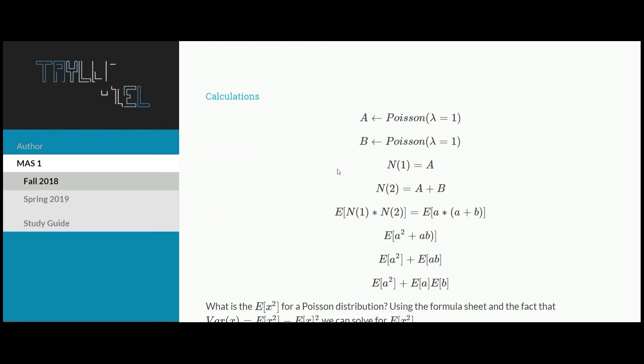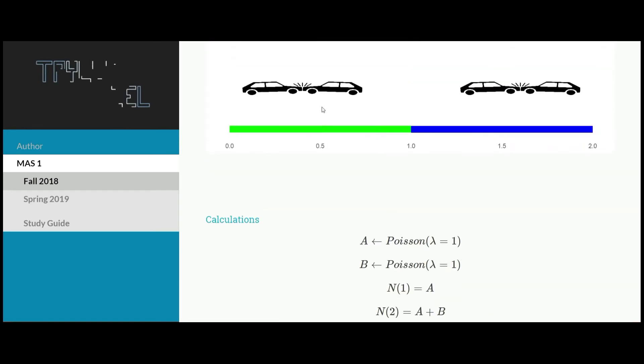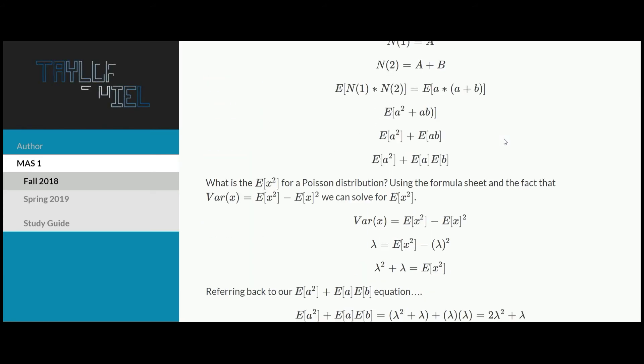Just need to make sure we understand that notation before we can get into the problem itself. With that being said, I chose to rewrite this problem into something that makes a bit more sense to me. I decided to denote A as a Poisson process of lambda equal to 1. A is corresponding to this green portion, and then B, again, a Poisson with lambda equal to 1. It's going to follow that same distribution, but here we're denoting this blue section of time as B.